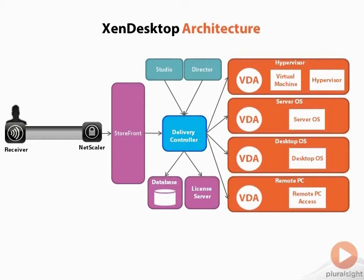The difference is that with a server operating system, you install the application and you can have 100 users connect to that server — pretty simple. With a desktop operating system, if you install the application on a desktop, that desktop is not a multi-user operating system. So if you have 100 users that need access to that application, you need to provision 100 VMs with that application installed in order to give access.